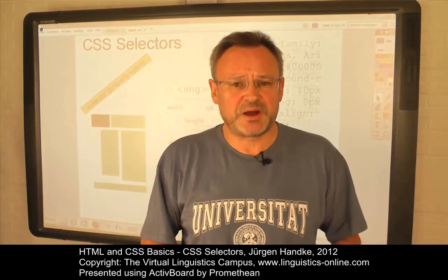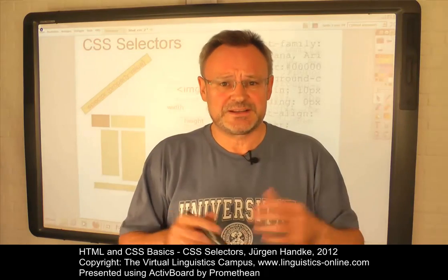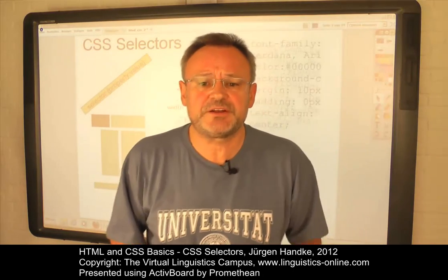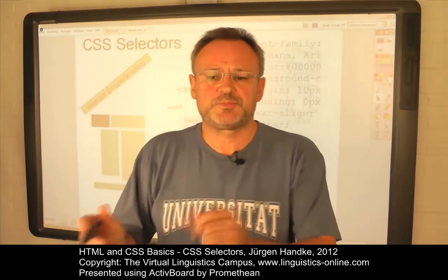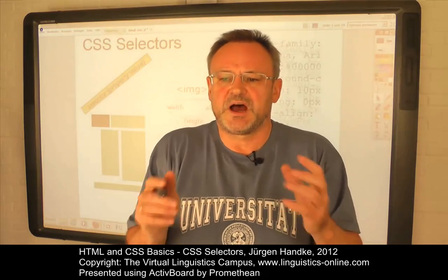In our first e-lecture about cascading stylesheets, we saw that the basic structure of an instruction in a cascading stylesheet can be divided into two main elements: selectors and property value declarations. This e-lecture illustrates how we can use the various types of selectors that can be applied to HTML code.